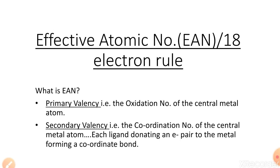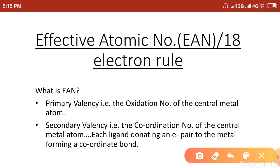Today we shall see what is EAN, or the 18 electron rule, also known as the Effective Atomic Number rule. During the formation of a coordination complex, there are two terms: primary valency, which denotes the oxidation number of the central metal atom, and secondary valency, which denotes the coordination number — that is, how many ligands are attached to the central metal atom by coordinate covalent bonds.